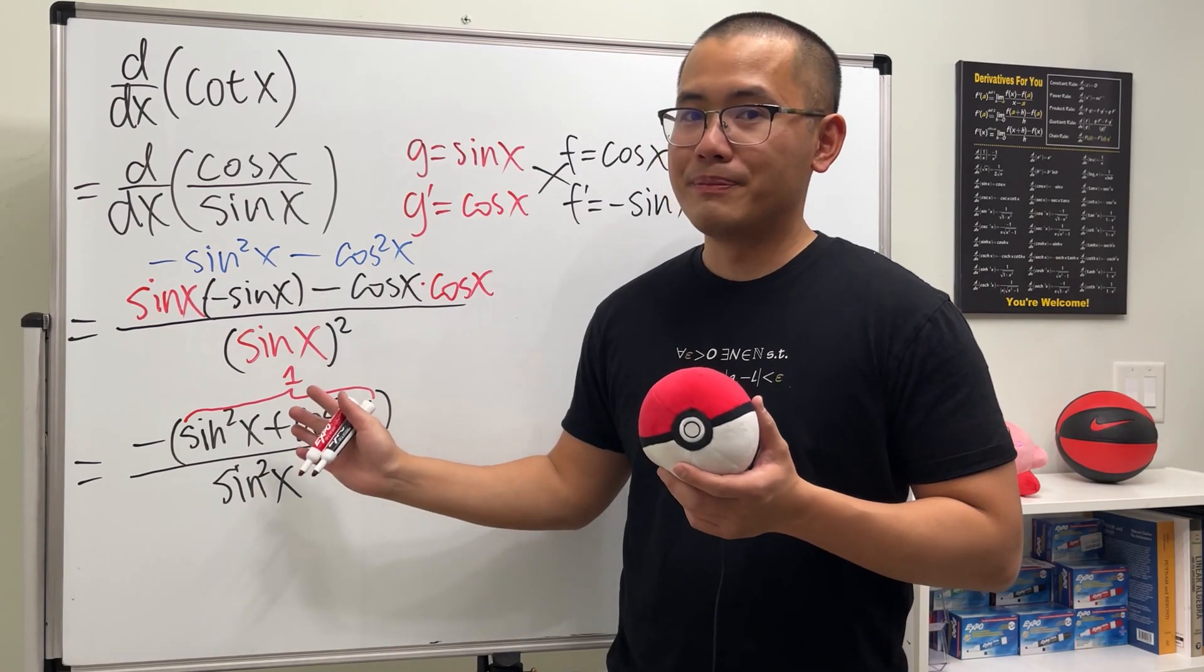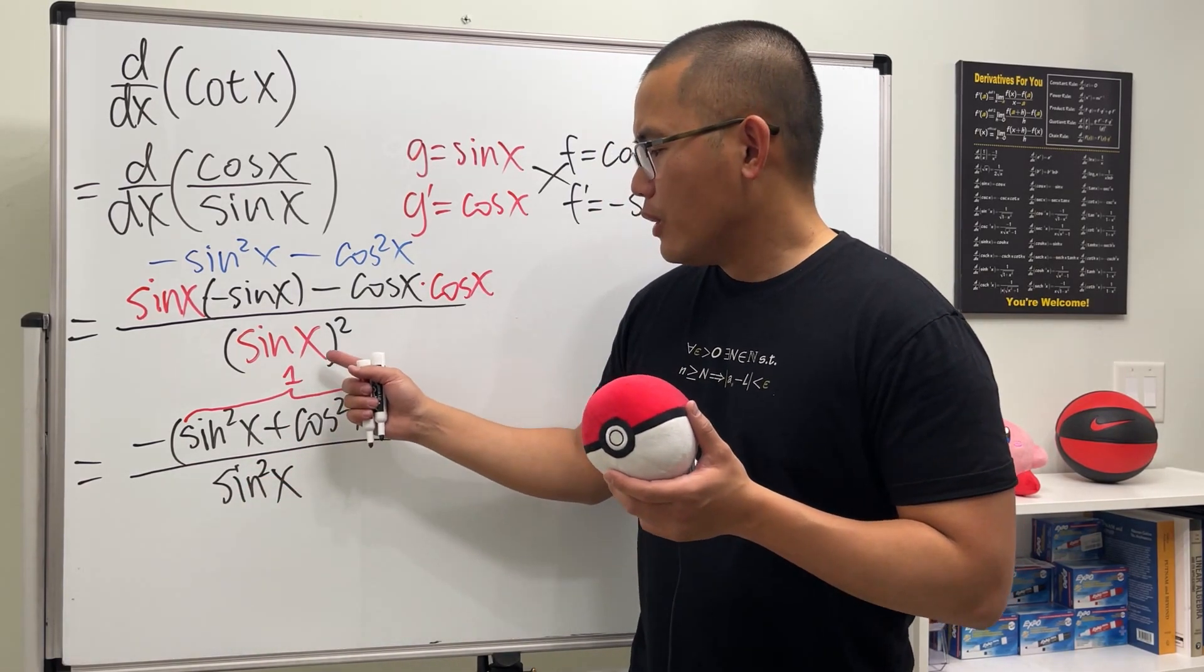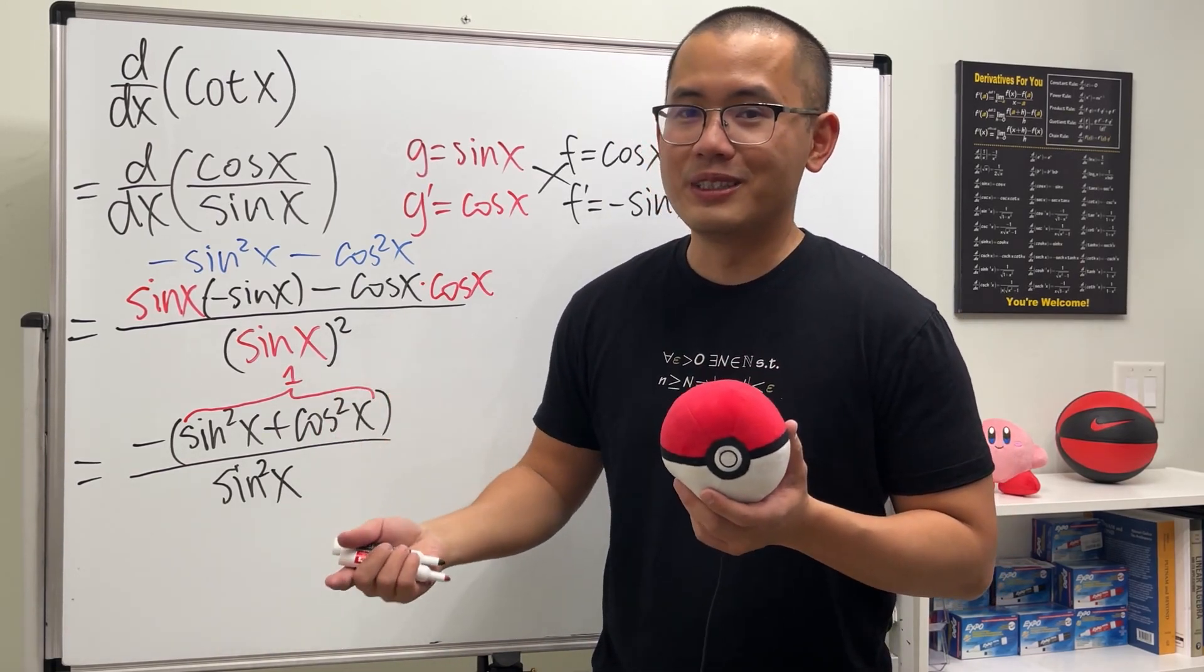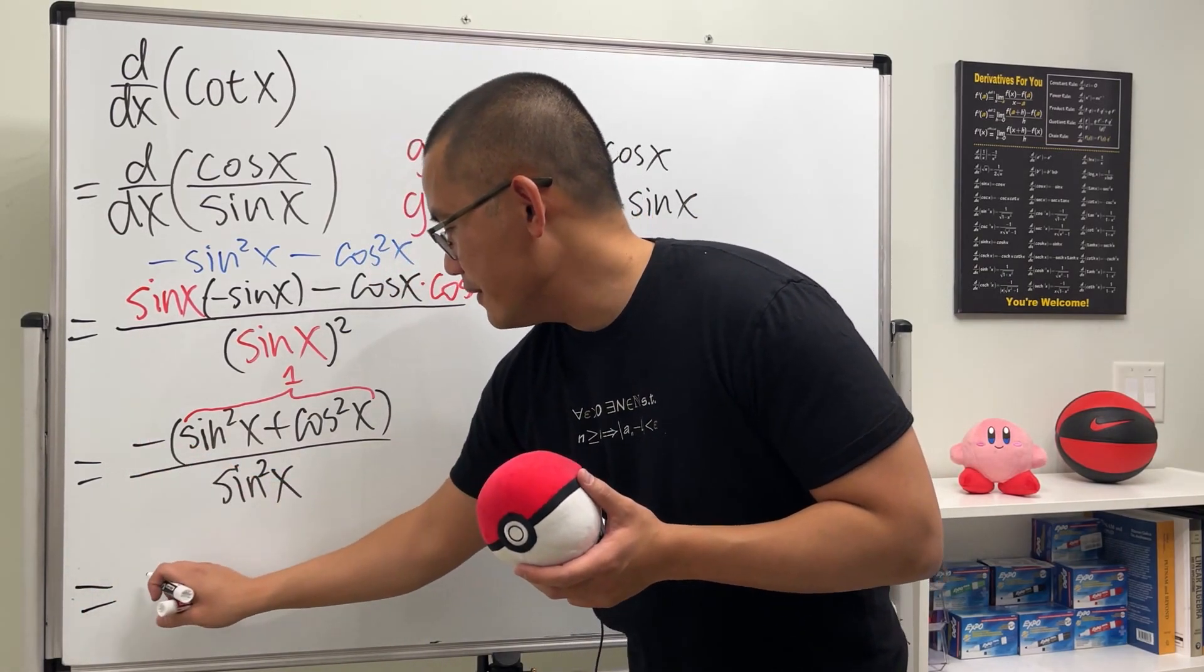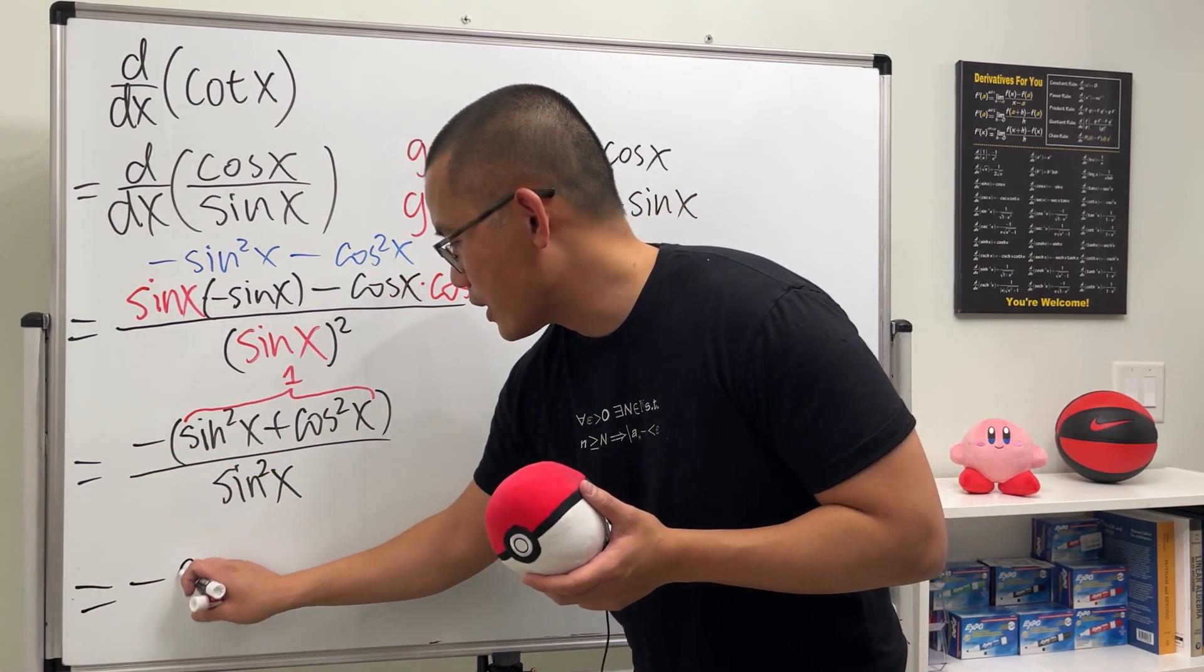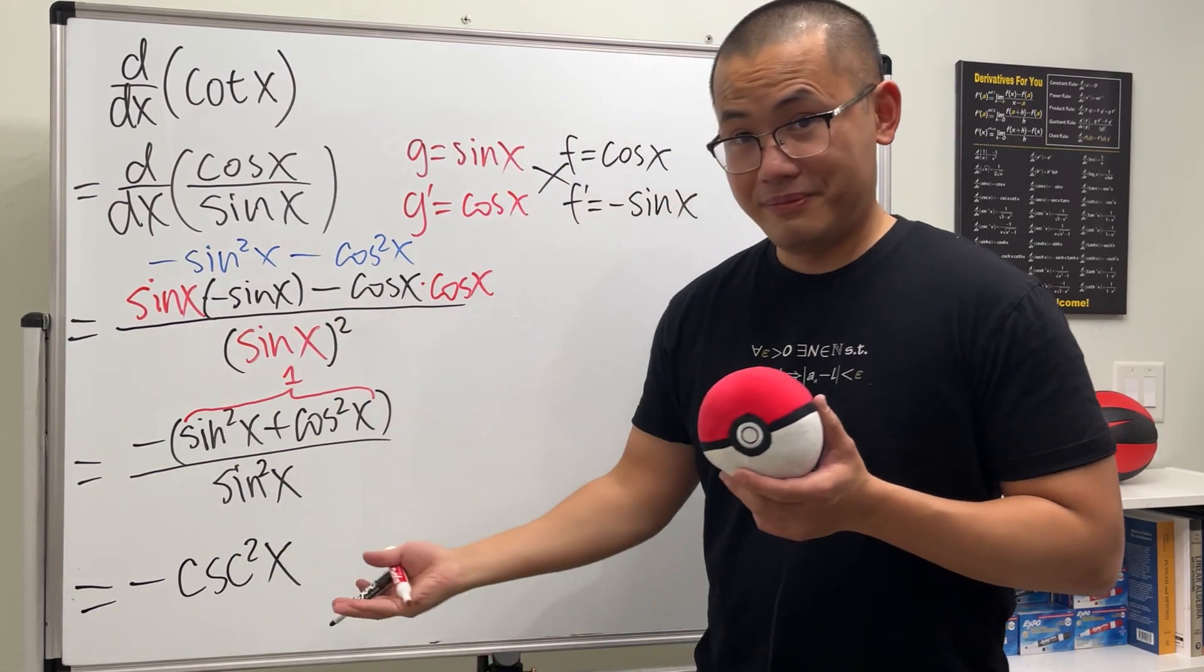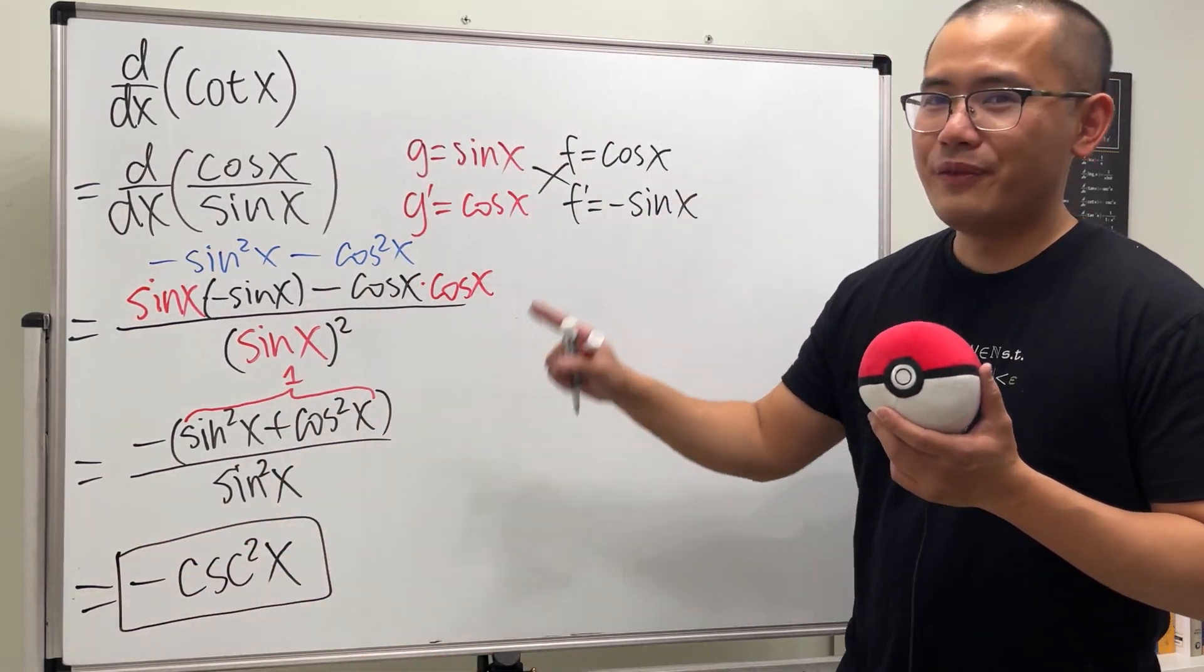Over sinx squared. And we know 1 over sin is cosecant. And 1 over sin squared is just cosecant squared, right? So all in all, this right here will give us negative. And then we have, again, cosecant squared. And then the input is x. Just like that. And that's the derivative for cotangent.